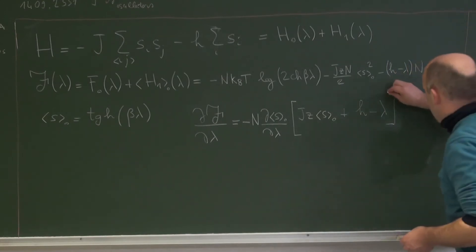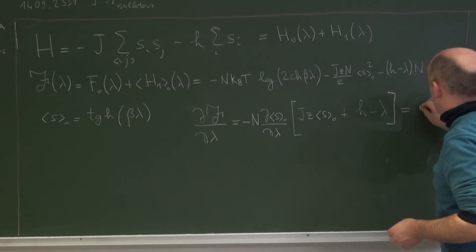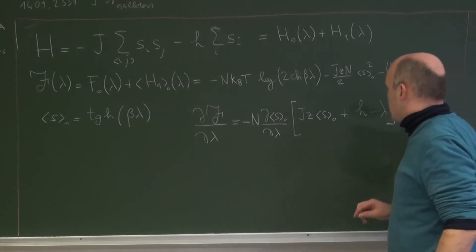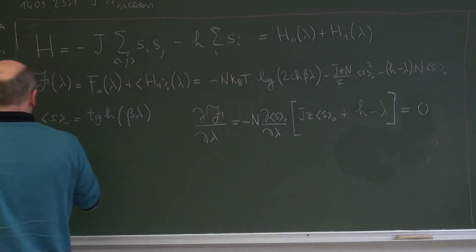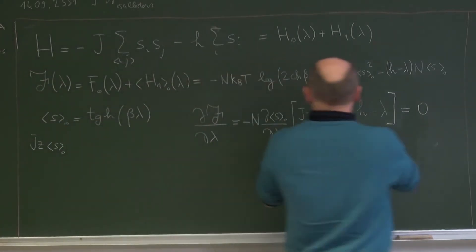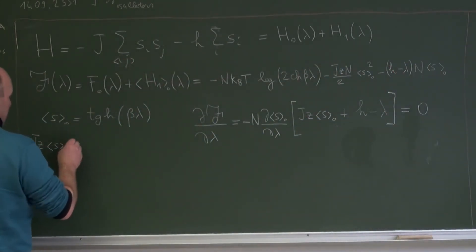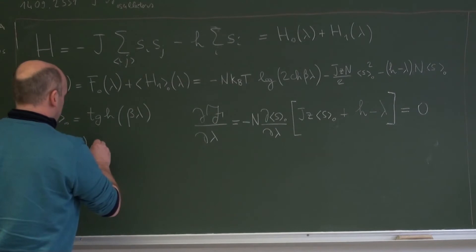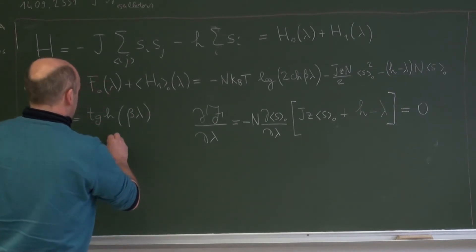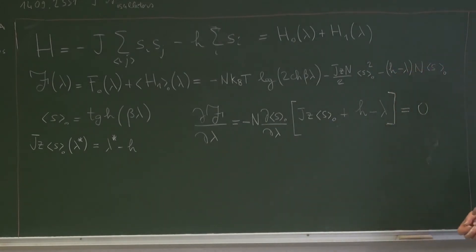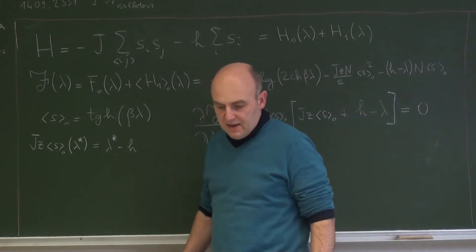What is the optimal value? It's the value which minimizes this quantity, so I have to set it equal to zero. The equation is very simple. The optimal value gives the following equation: Jz times S₀ — remember, this one still depends on λ — is equal to λ* minus H. So this is the solution of our problem. This is the value λ* which minimizes this variational free energy.